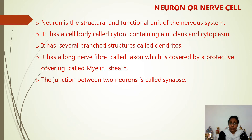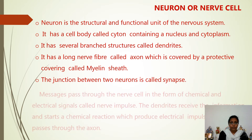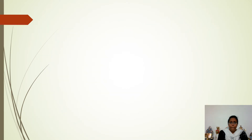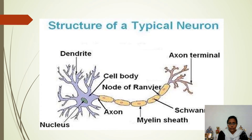The junction between two neurons is called a synapse. Messages from the nerve cell travel in the form of chemical and electric signals called nerve impulses. The dendrites receive the information and start a chemical reaction which produces an electric impulse, and this is passed through the cell.